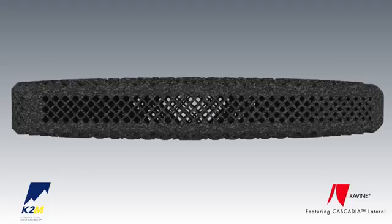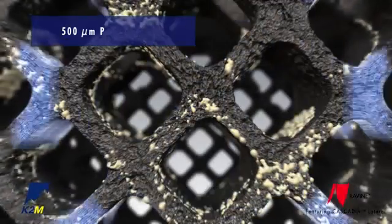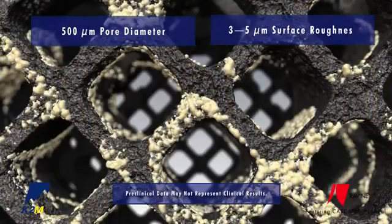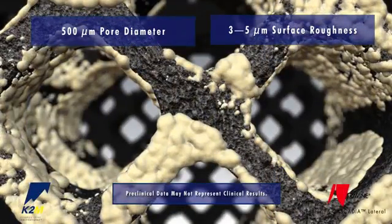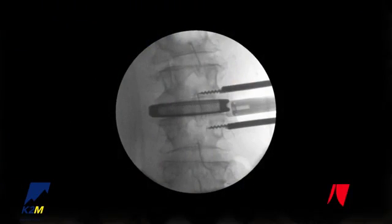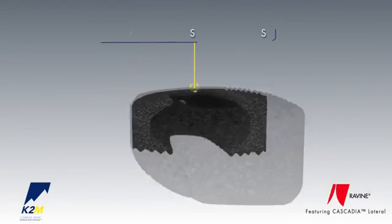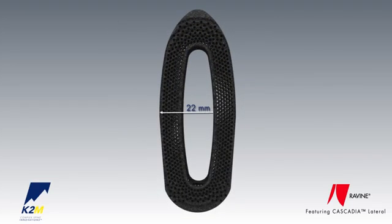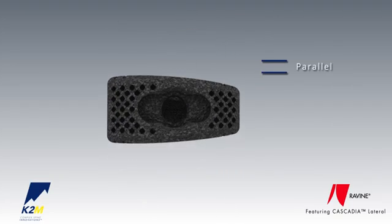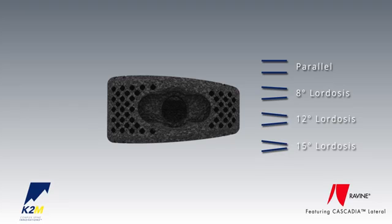The Cascadia Lateral interbody system features lamellar 3D titanium technology and is approximately 70% porous. Its 500 micron pore diameter and 3 to 5 micron surface roughness are designed to promote cellular activity and potential bone integration, while allowing for increased radiolucency compared to its solid titanium equivalent. The internal reverse hourglass implant design allows for increased end plate contact compared to an elliptical peak interbody without sacrificing internal bone graft volume. Cascadia Lateral is offered in 22mm widths, parallel, 8, 12, and 15 degree lordosis.